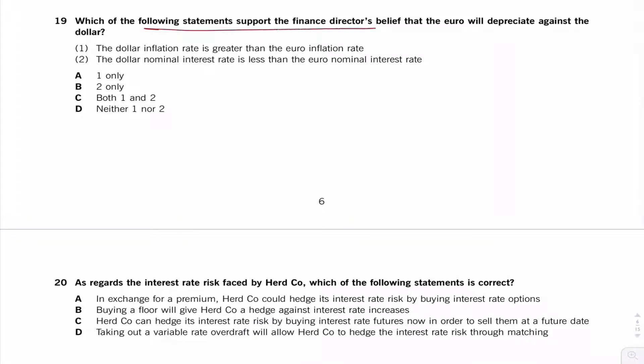Which of the following statements support the belief that the Euro will depreciate against the dollar? Let's get that clear. If it's 1.5 Euros to the dollar, it will depreciate if it goes above that, if it goes to 2 Euros to the dollar. That means the Euro is depreciating.